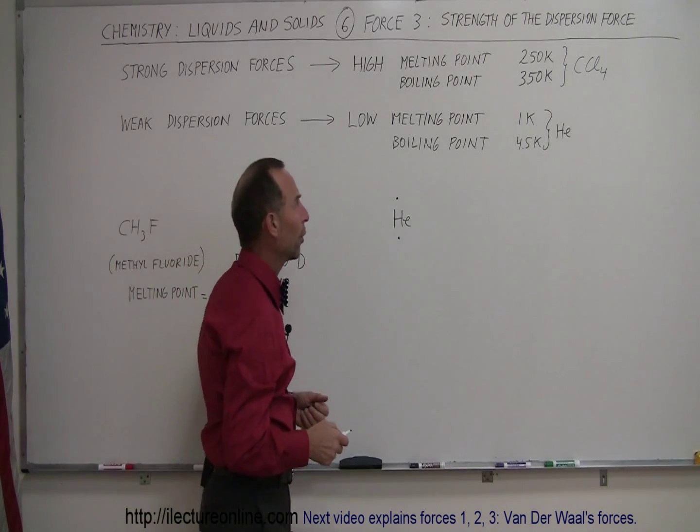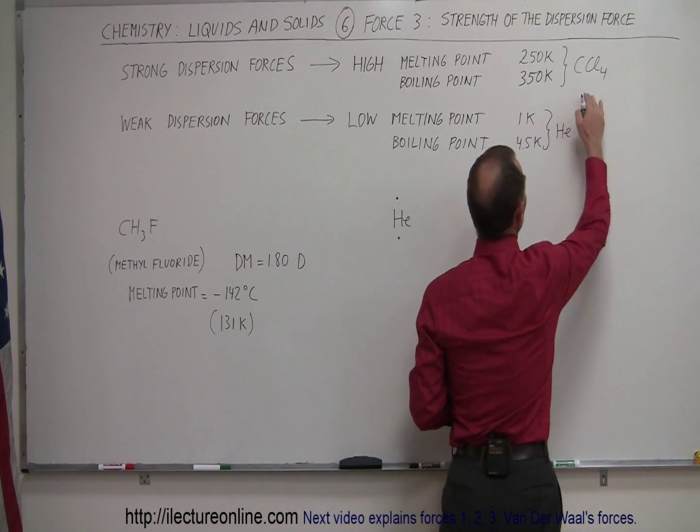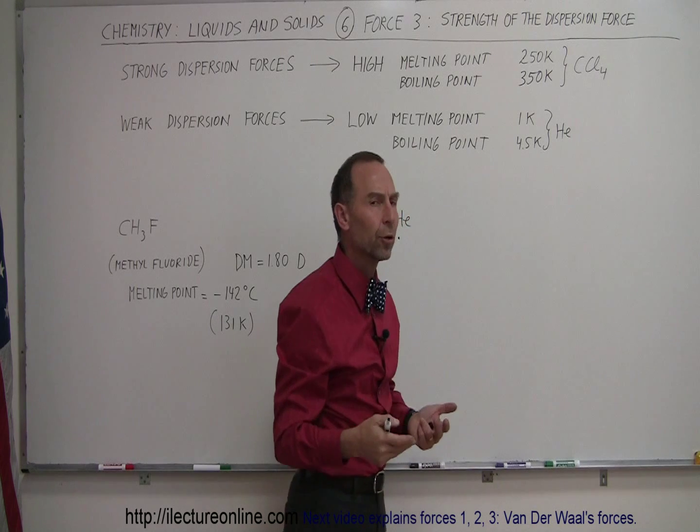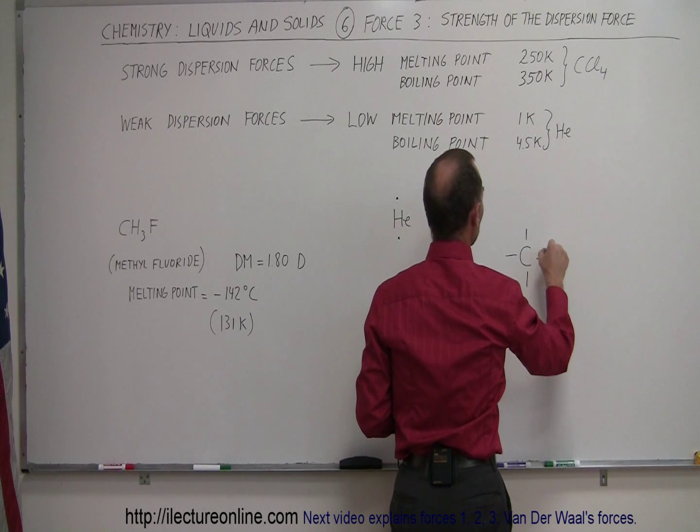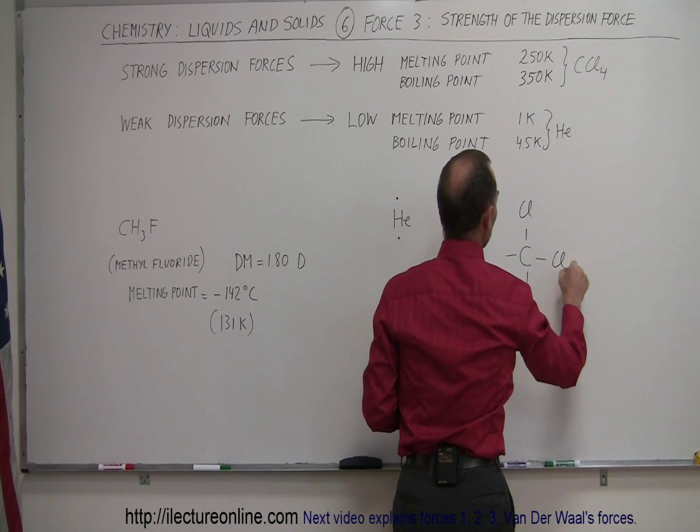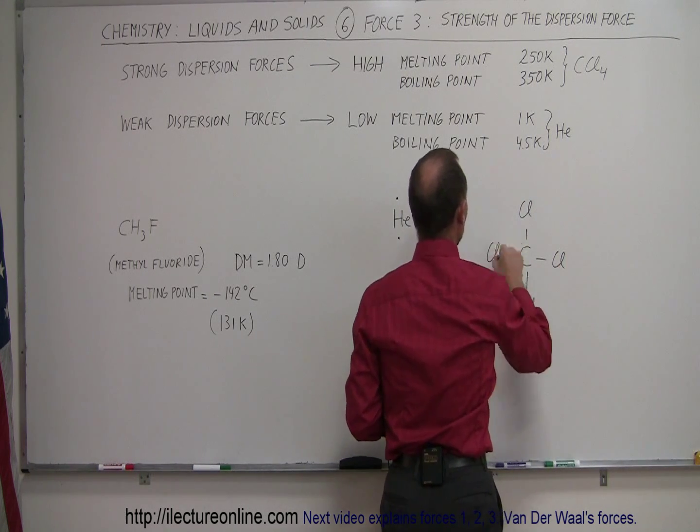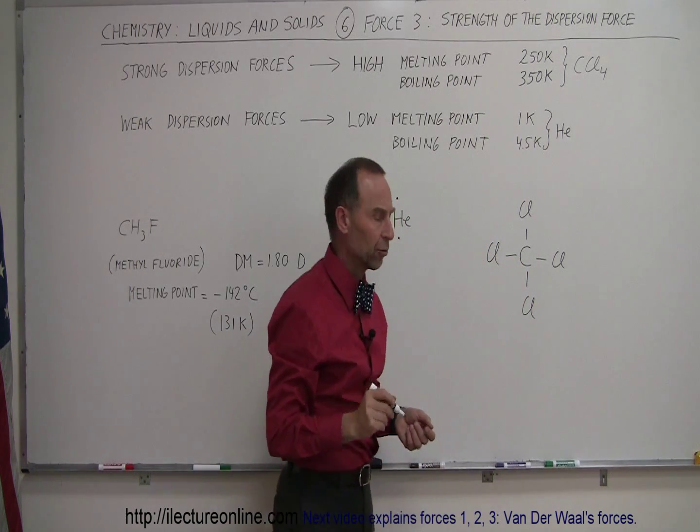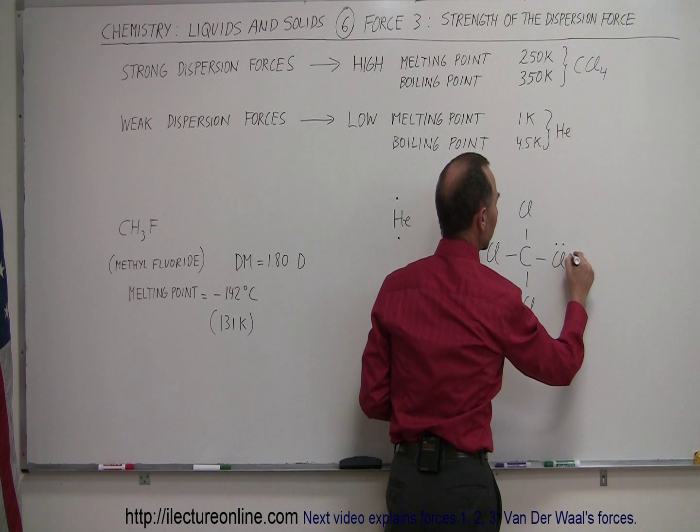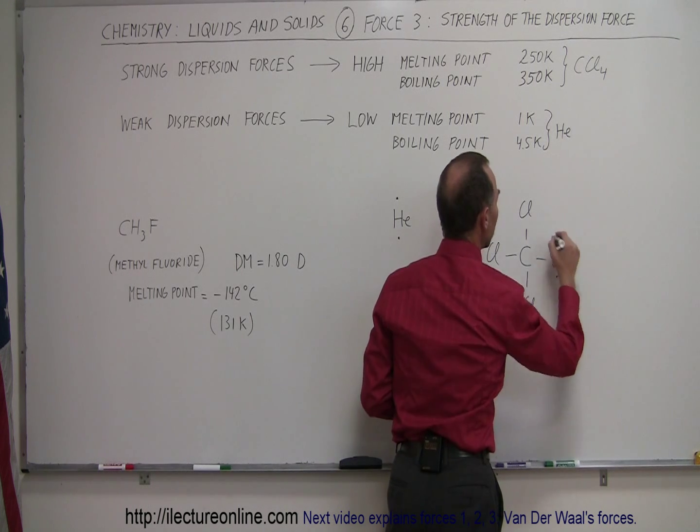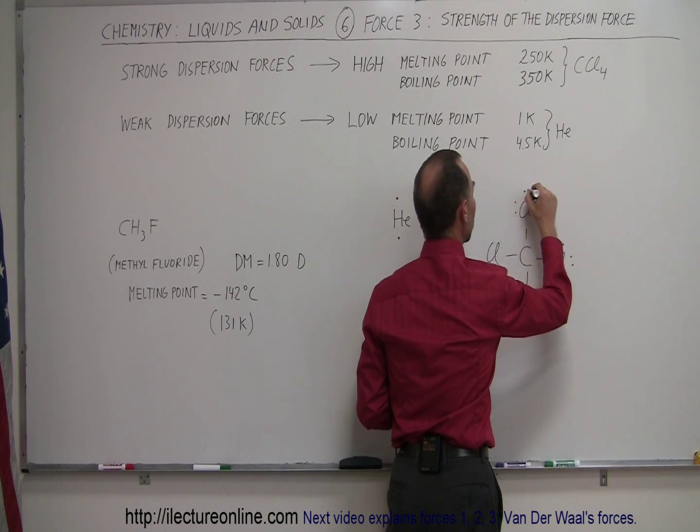Now for carbon tetrachloride it's a very different story. Let's draw out the molecule. We have a carbon making four bonds with four chlorine atoms. Each chlorine atom started out with seven valence electrons. One is being used in the bond, that leaves us with six valence electrons left over to make three unused electron pairs.